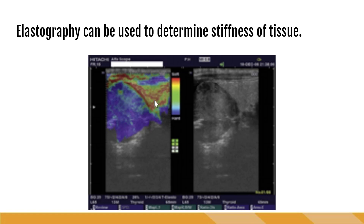We can see that the rest of the thyroid tissue, which looks very normal on the B-scale, shows reds, yellows, and greens — all very soft, squishy tissue — compared to this large nodule. But of course, a biopsy needs to be performed to confirm.